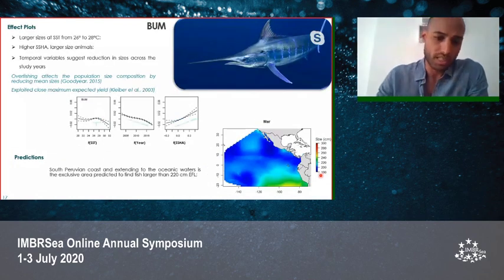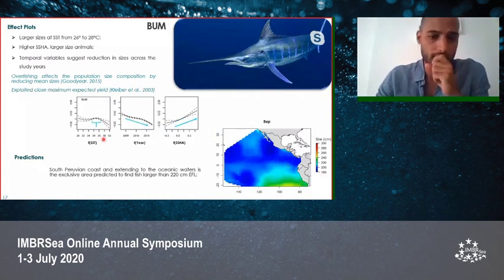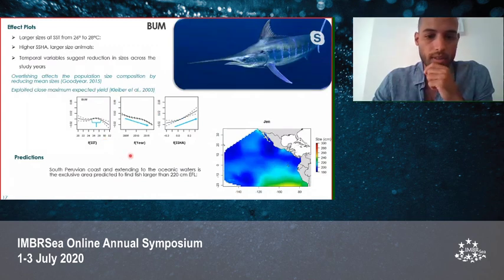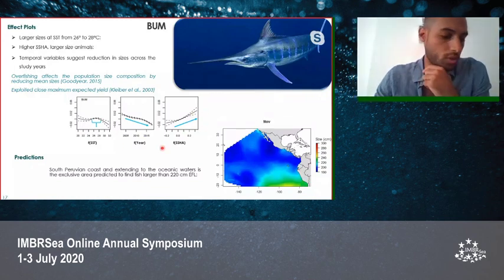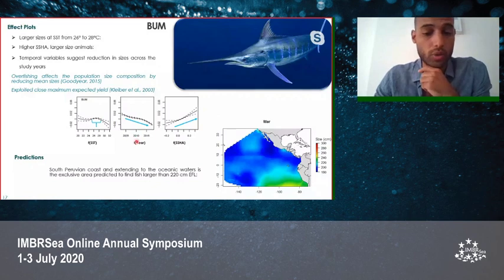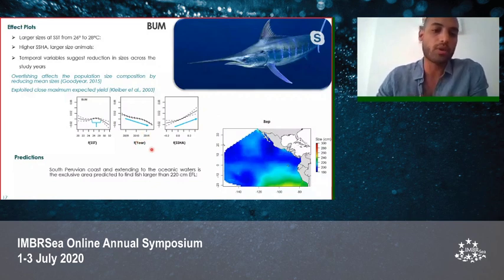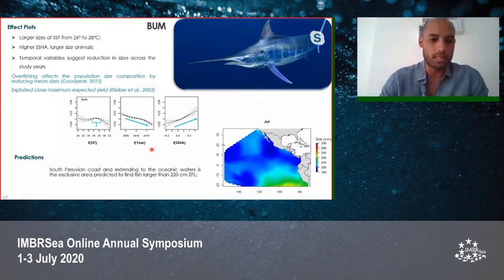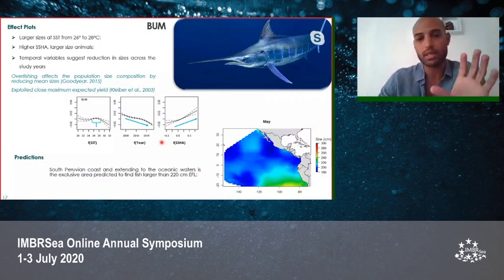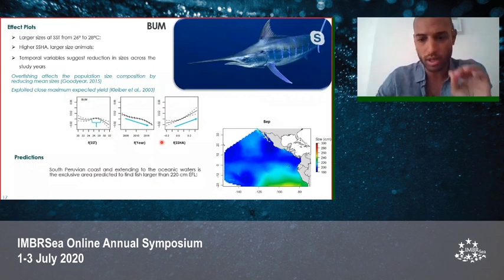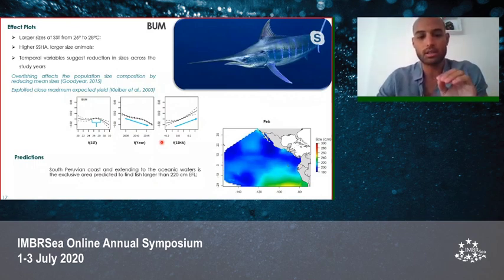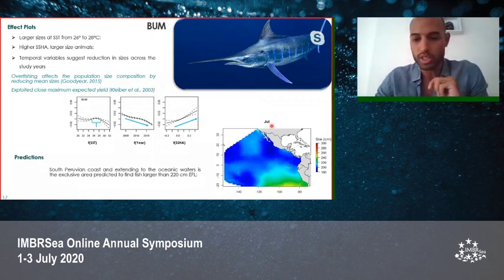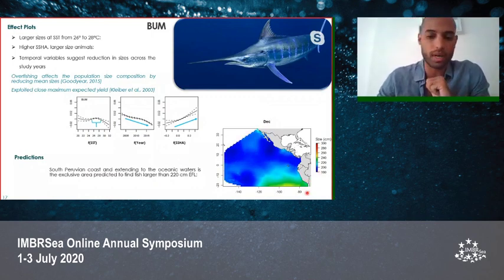The blue marlin showed larger animals in a temperature range between 26 and 28°C, with larger individuals also occurring at higher seasonality values. Notably, this species showed a trend of reducing sizes along the study years, which may be a response to overfishing, since overfishing affects population size composition by reducing mean sizes. This species is exploited near maximum expected yield, though the most recent stock assessment does not formally indicate overfishing. Prediction maps show large individuals in the southern part of the region.